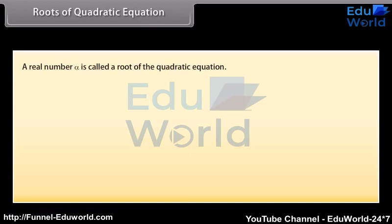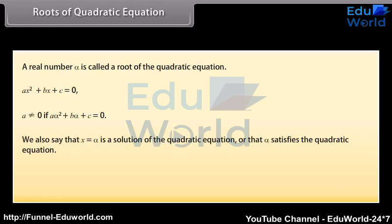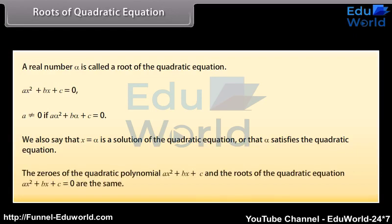Roots of a quadratic equation. A real number alpha is called a root of the quadratic equation ax squared plus bx plus c equals zero, where a is not equal to zero, if a·alpha squared plus b·alpha plus c is equal to zero. We also say that x equals alpha is a solution of the quadratic equation, or that alpha satisfies the quadratic equation. The zeros of the quadratic polynomial ax squared plus bx plus c and the roots of the quadratic equation ax squared plus bx plus c equals zero are the same.